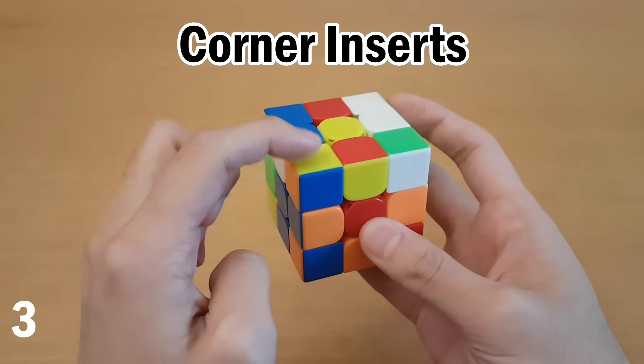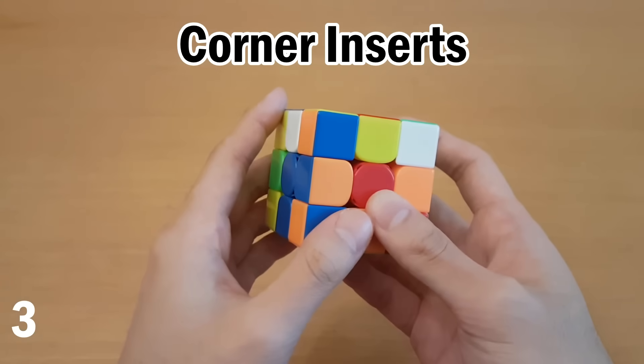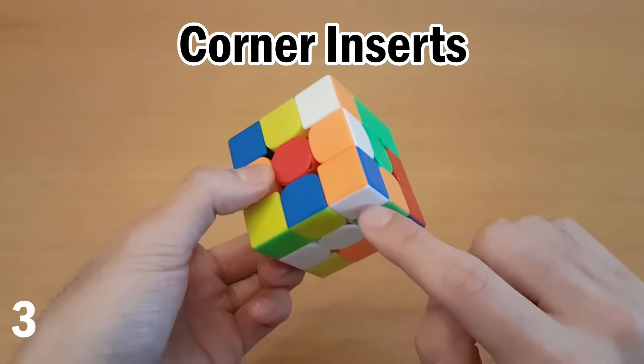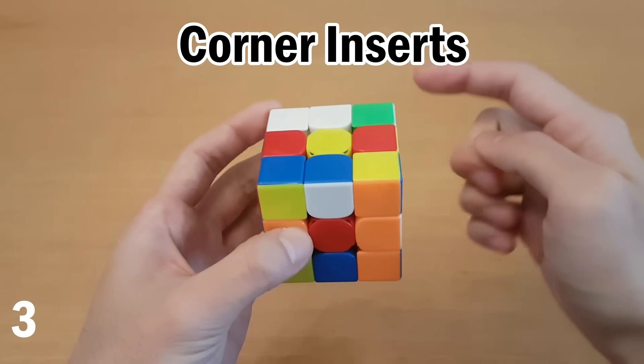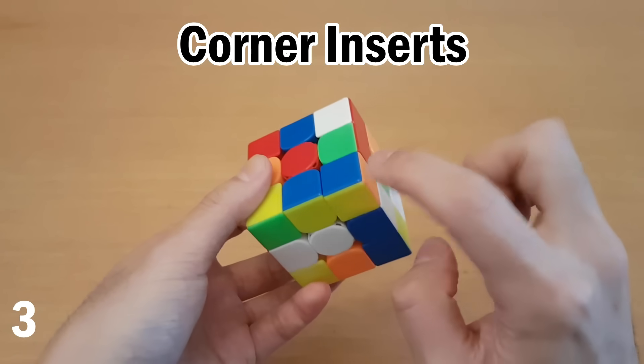And unlike CFOP, this actually works for corners where the white or yellow sticker is facing up. So in this case, I can move this one out, and then this one, I'll move it all the way back here, and then just do R2, and that inserts it.